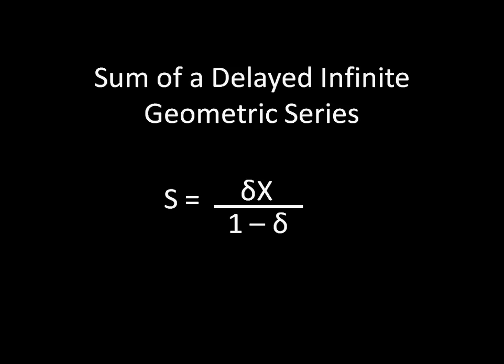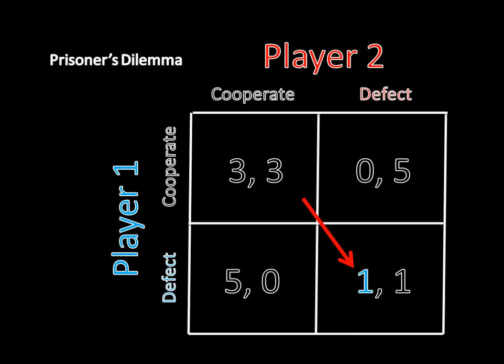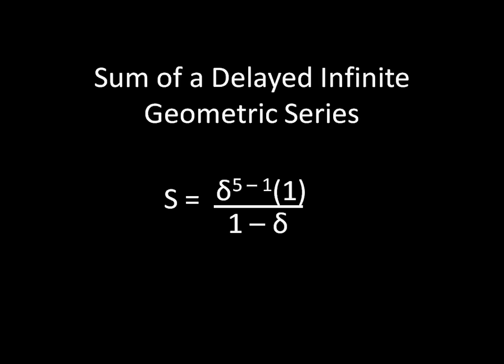And so with that, let's get back to our question. What is my payoff for mutual defection from the fifth period forward? So we're just defecting from period five all the way through until the end of time. And so we're going to grab our one from here, the payoff for mutual defection. And we're going to make n equal to five. And we have our answer, which is, of course, it's going to simplify down to discount to the fourth over one minus discount. All right, I hope that was clear.